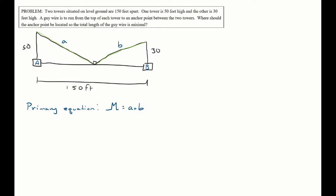Now I need a secondary equation to get the primary equation in one variable. Is there anything else that relates those two variables? This is where the diagram helps a lot, because I can see a couple of right triangles. If I see right triangles, Pythagoras is at the front of my mind. The only problem is I'd have to do two different Pythagorean theorems — one for triangle A and one for triangle B.